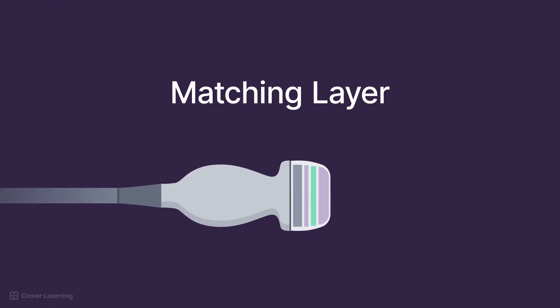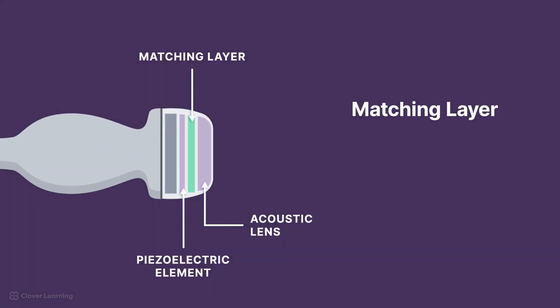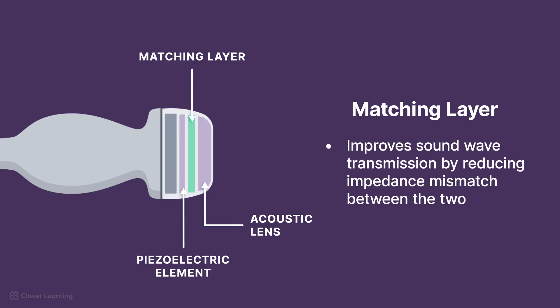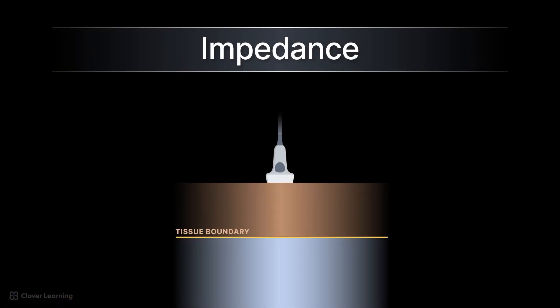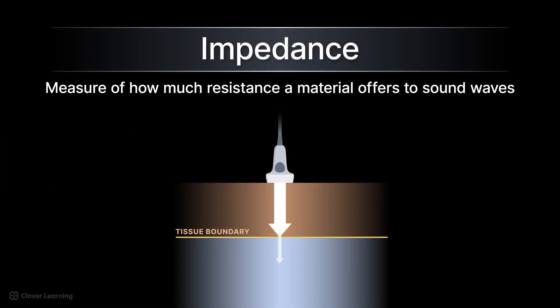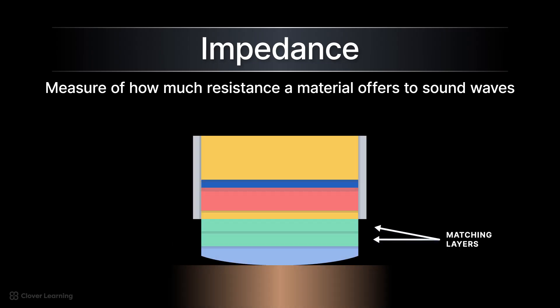The next component, moving toward the front of the transducer, is the matching layer. This layer sits between the crystal and the acoustic lens, improving sound wave transmission by reducing the impedance mismatch between the two. Impedance is a measure of how much resistance a material offers to sound waves. If there is a large difference in impedance between two materials, most of the energy created is reflected back rather than transmitted. Matching layers are designed to have an acoustic impedance value between that of the crystal and the tissue, so it can act as a bridge to gradually transition the impedance between the piezoelectric crystal and the patient.